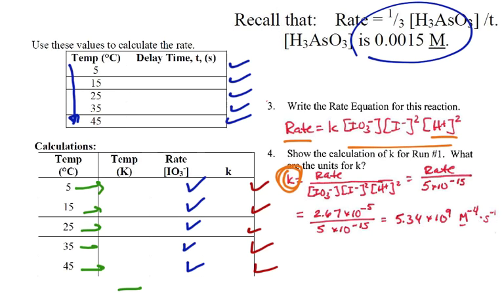So if we have these five rates, then we can figure out these five new k's. And we're going to use that data to calculate the activation energy.